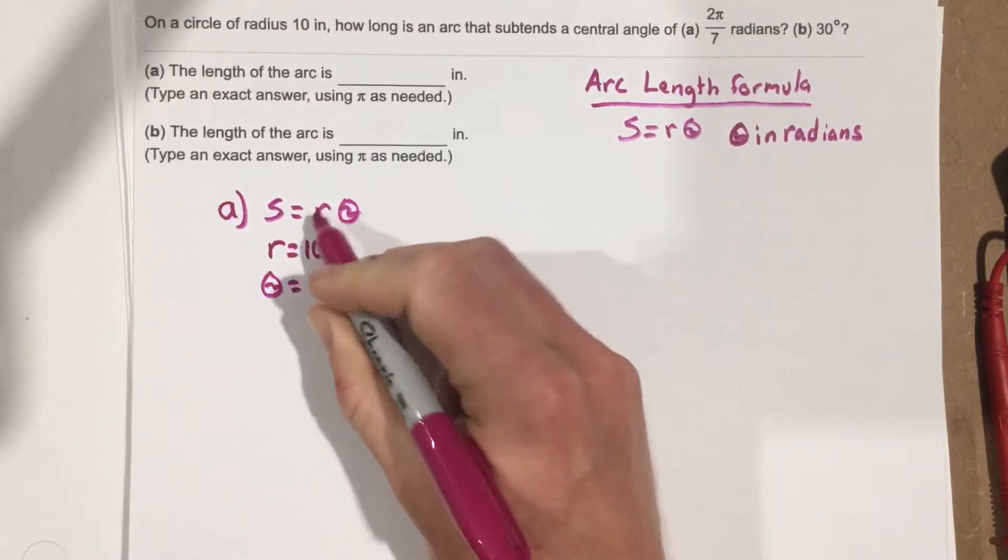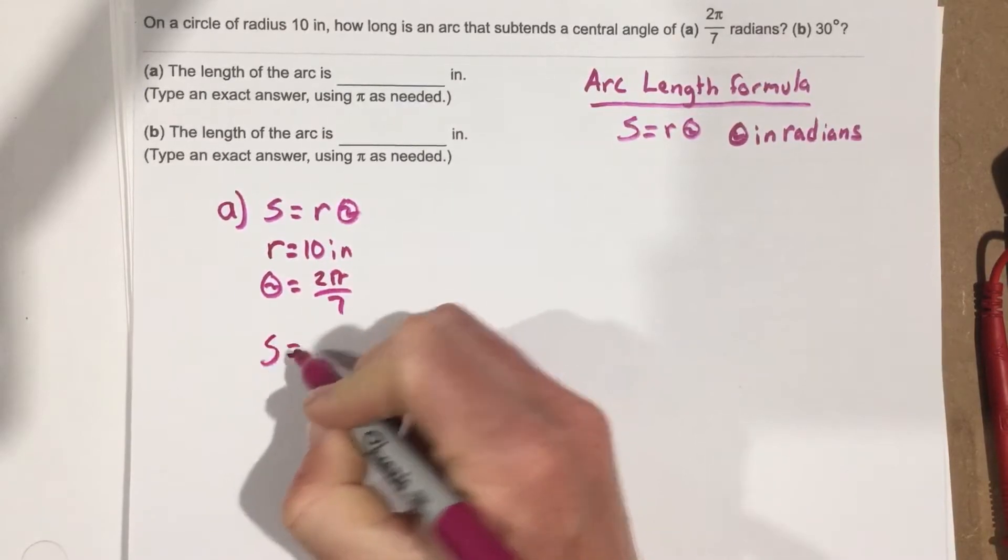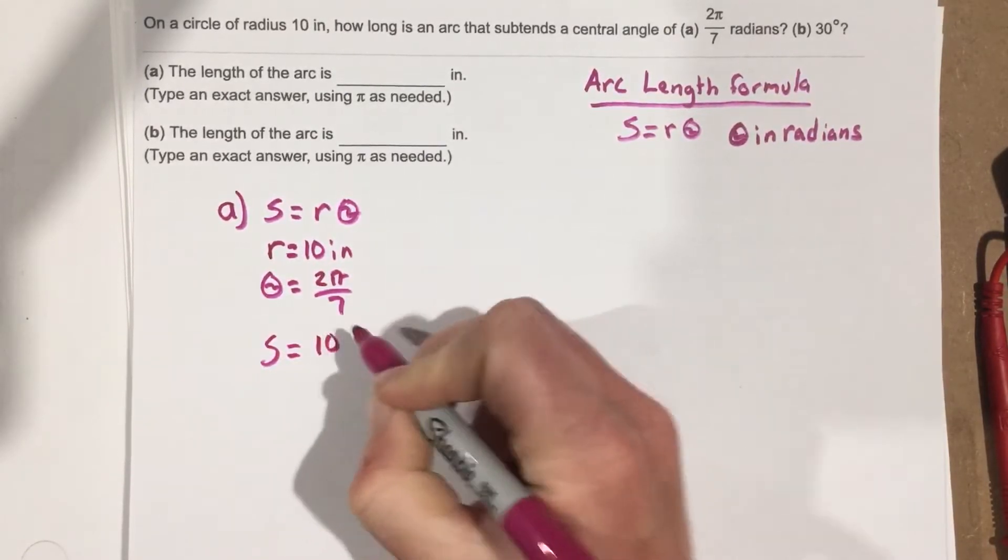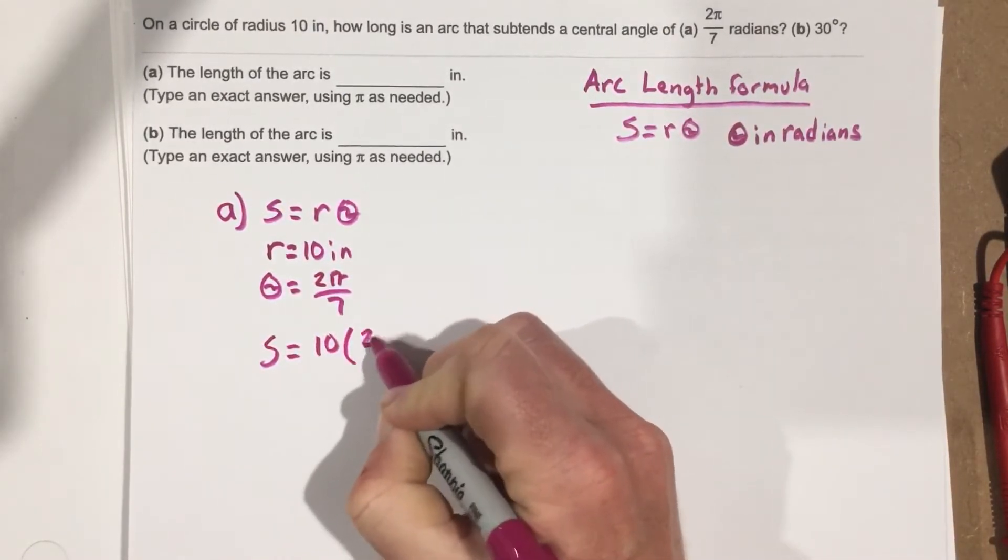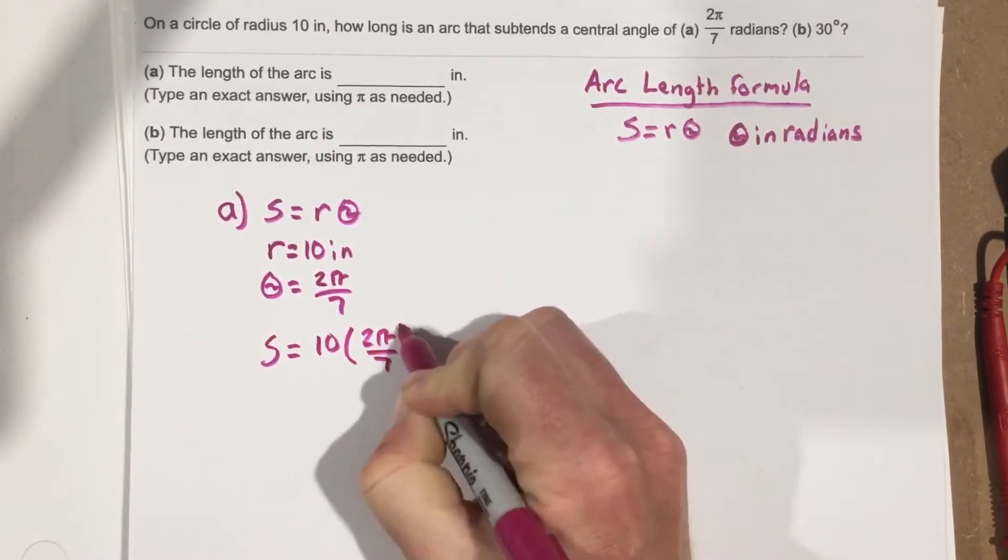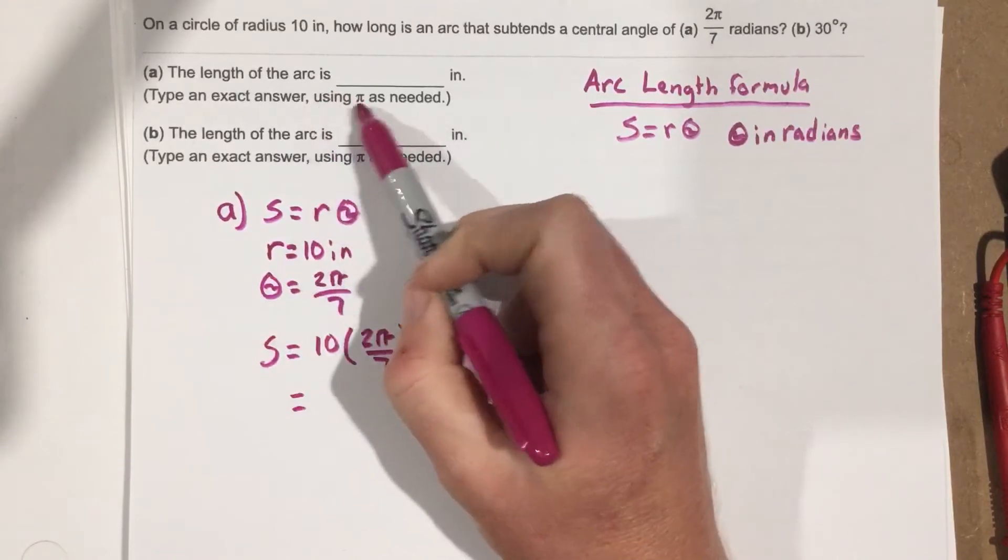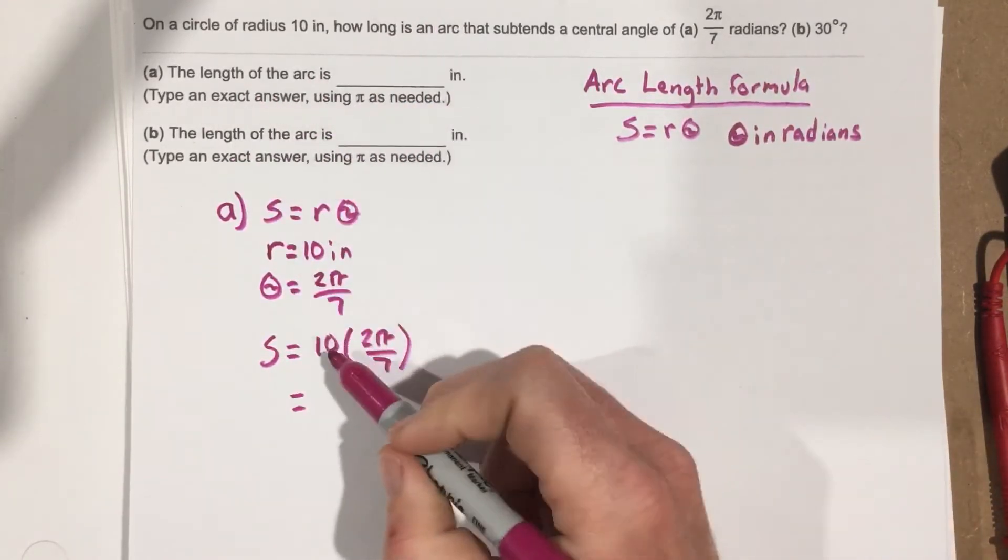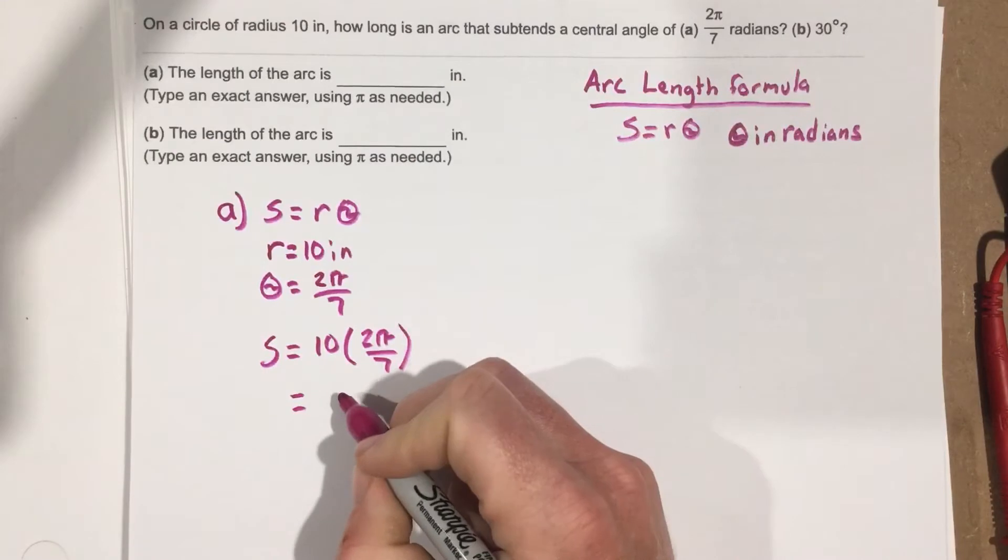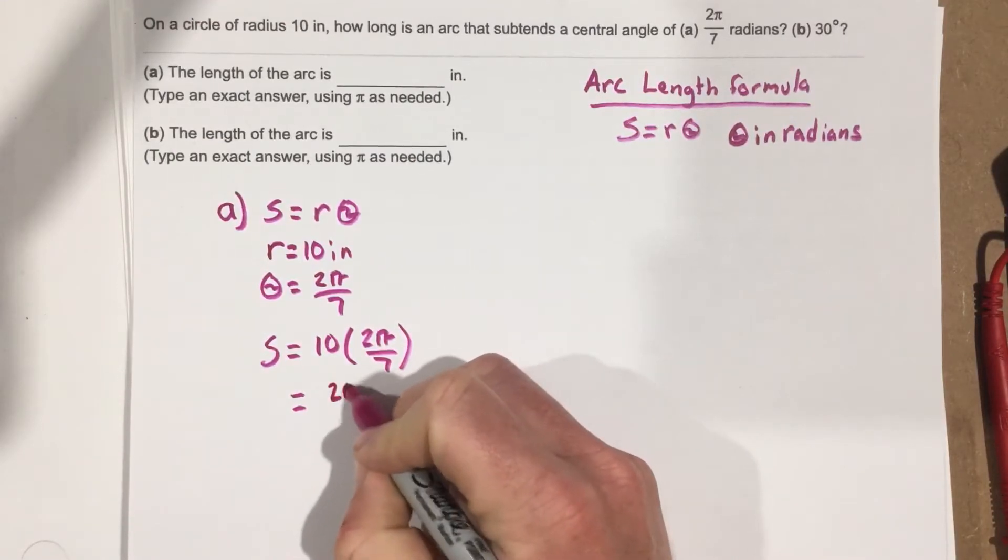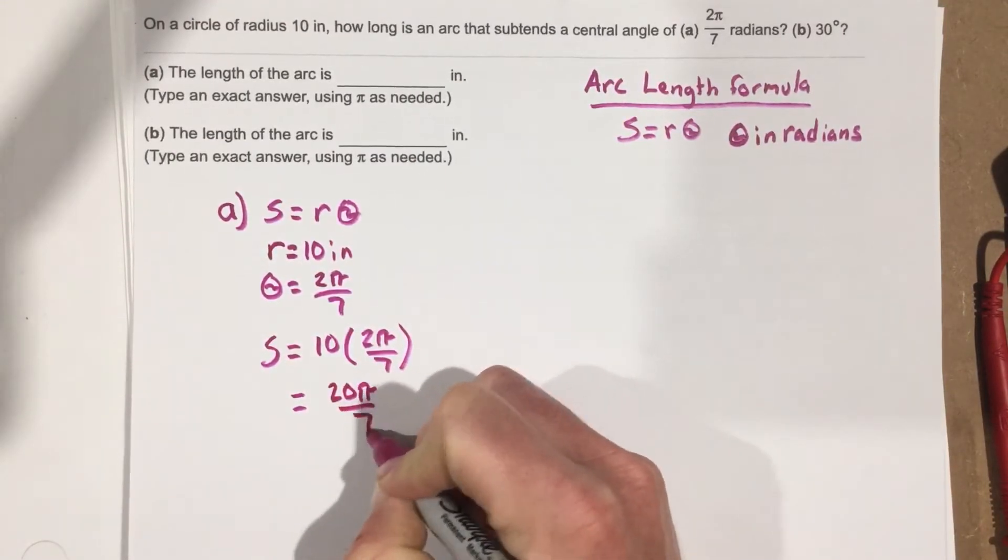So we can plug both of those in to the formula, and we can say S equals 10 times 2π over 7, which, when you multiply those together, they're going to want you to leave it in pi. It says using pi as needed. So type an exact answer. So in this case, we get 20π over 7 for the arc length.